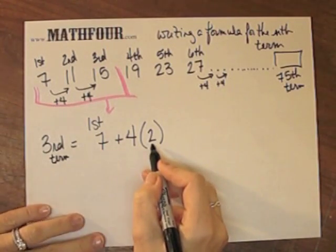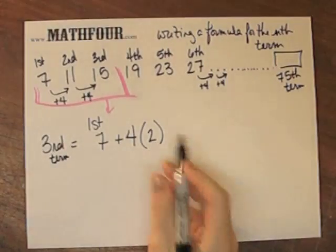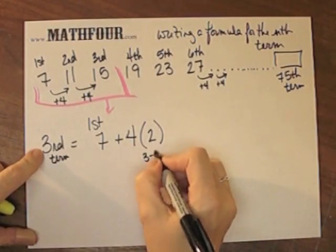So what is this 2? This 2 is the same as 3 minus 1.